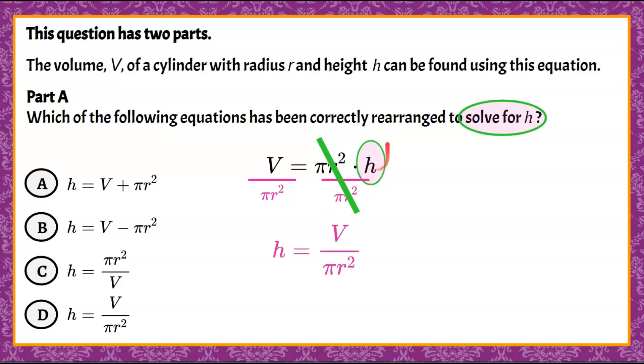So if we rewrite this, we know that h is equal to all of this, volume V divided by πr². And we can see that that answer corresponds to choice D, h equals volume divided by πr². So it's the same formula as this volume formula, just everything's rearranged to say that the height of a cylinder is equal to its volume divided by π times r squared.